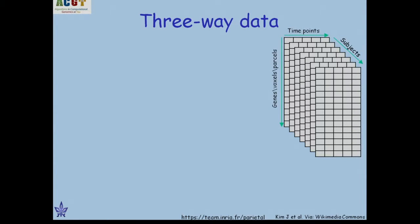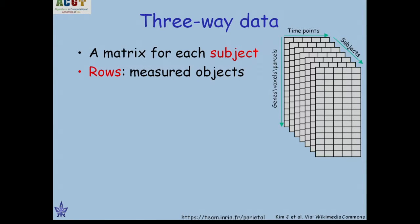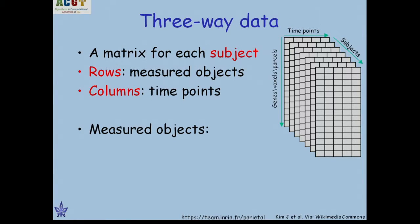We have been thinking about three-way data. In addition, think about having multiple time points. Each matrix would be genes by time points, and you would have multiple matrices for multiple subjects. You want to find modules that are common to some or all of them. The rows would be the measured objects — genes — and the columns would be the time points, with gene expression as the measurement.